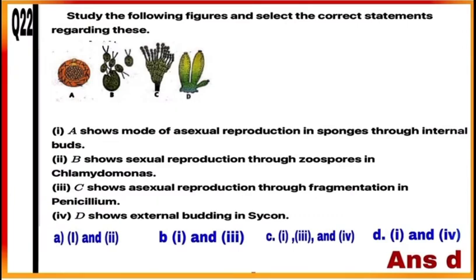Question 22: Study the following figures and select the correct statements. Statement 1: A shows asexual reproduction in sponges through internal buds — this is correct. Statement 2: B shows sexual reproduction through zoospores in Chlamydomonas — this is wrong; B actually shows asexual reproduction through zoospores. Statement 3: C shows asexual reproduction through fragmentation in Penicillium — this is also wrong; C shows asexual reproduction through conidia in Penicillium. Statement 4: D shows external budding in Sponge — this is correct. So statements 1 and 4 are correct; mark D as the correct answer.